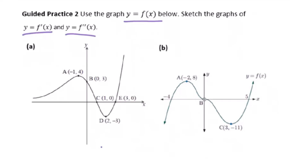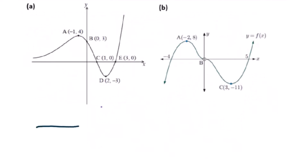For the first derivative, we need to draw a sign diagram first. This is a maximum, that means it will be a zero. The minimum here is also a zero. We don't have a stationary inflection. Going up is positive, going down is negative.